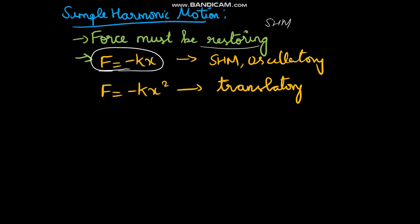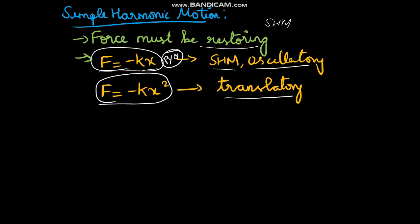If the restoring force is F = -kx, where k is the spring or force constant, then it is SHM. It is also oscillatory. If force is equal to -kx², then it is a translatory motion. This is a previous year NEET question — you must remember: force equals -kx for simple harmonic motion.